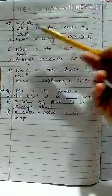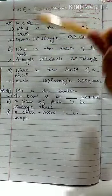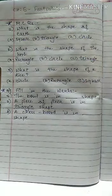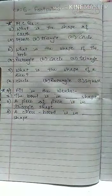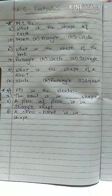First question is: What is the shape of Earth? What is Earth's shape - square, triangle, or circle? So here the answer is circle. Next is: What is the shape of the book?